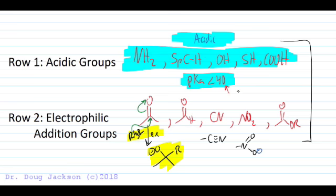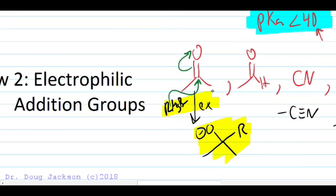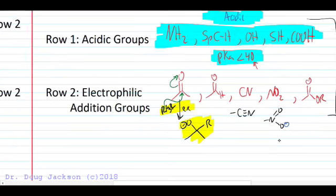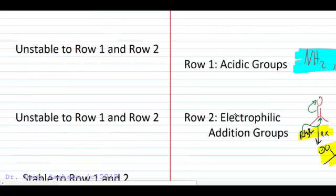In row two, we see here that we've got some carbonyls. We've got some CN triple bonds, NO double bonds, and so forth. So these pi bond acceptors with electronegative elements, these electrophilic addition groups, can undergo addition reactions such as this Grignard reaction that we see here where the nucleophile adds to the carbonyl instead of coupling to another reagent. So in row two, we've got these groups that are addition partners with some of these organometallic reagents. So row one and row two, let's see what we're stable to and what we're not stable to.